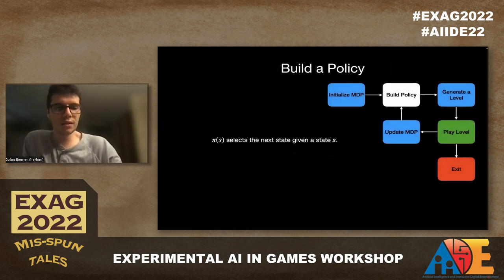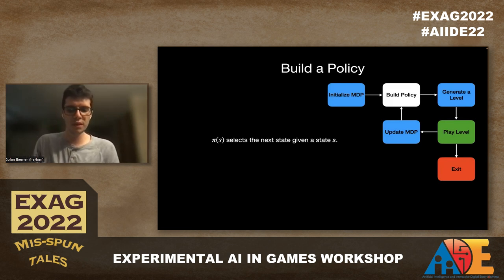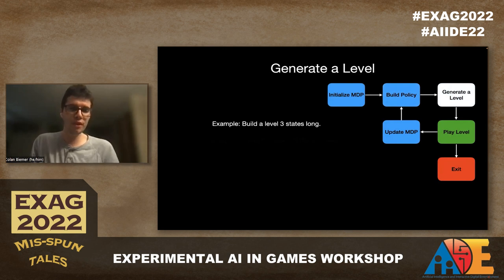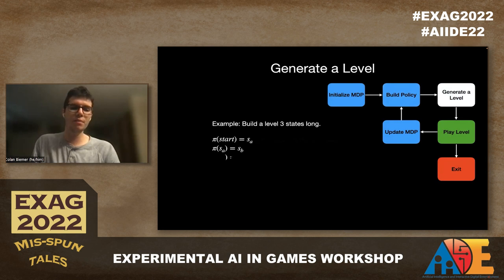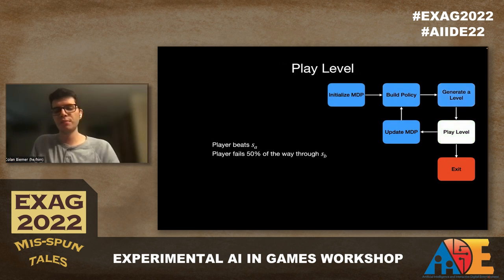A policy pi takes in a state and selects the next state. To generate a level, let's say we want to build one that's three states long. We enter start into the policy and get S of A, then S of B, then S of C. We take the whole level — the concatenation of S of A, S of B, and S of C — and give it to the player. Let's say the player beats S of A and fails 50% of the way through S of B.